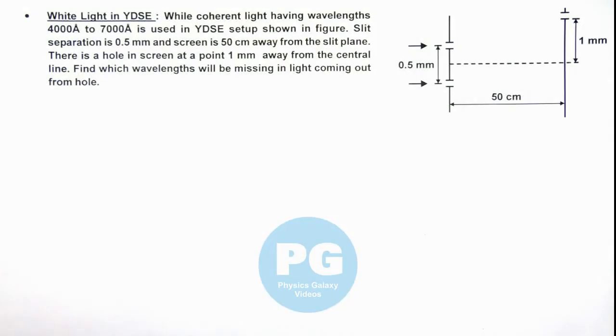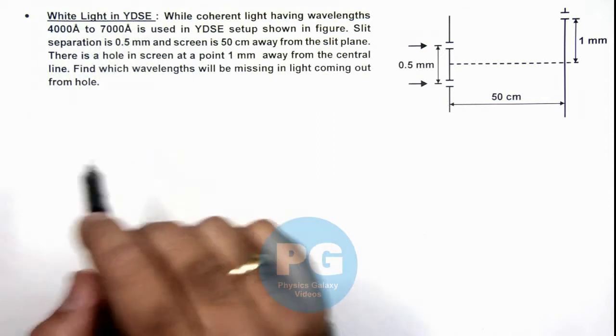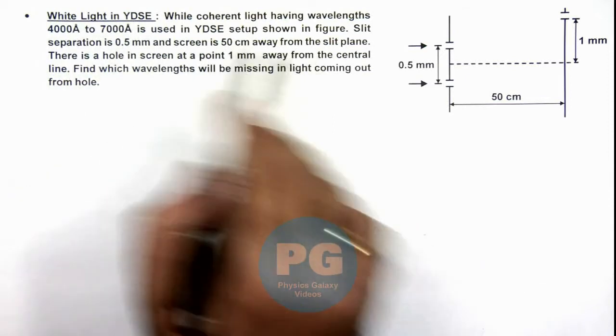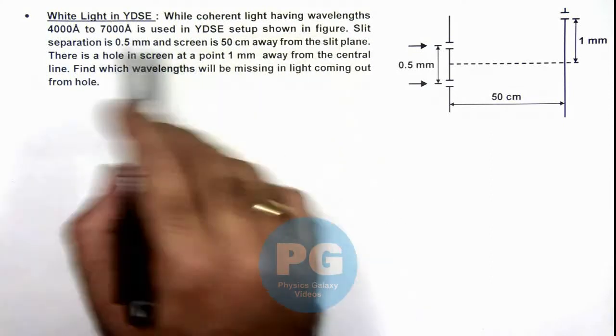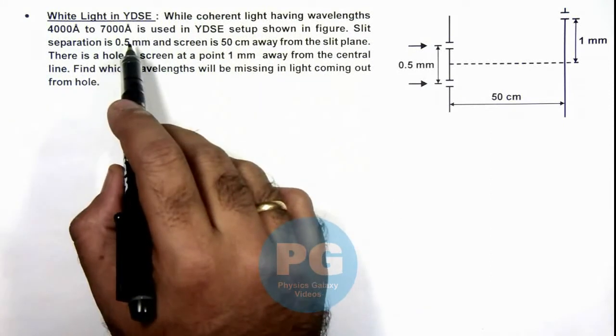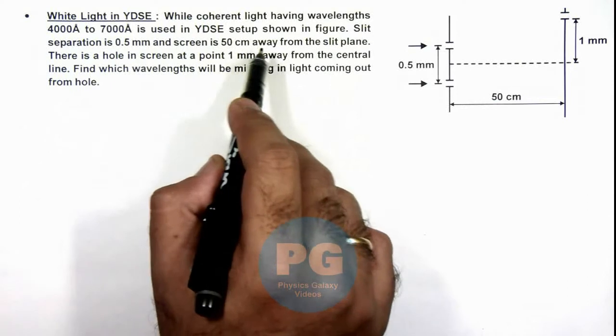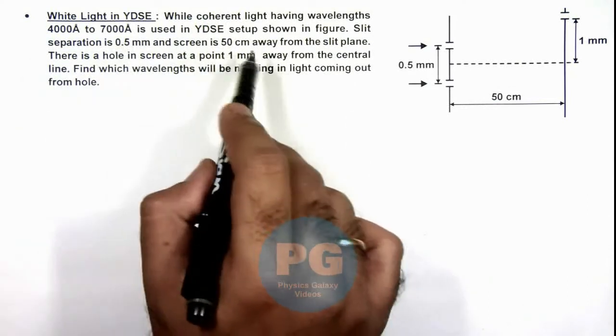In this illustration, we'll be analyzing white light in YDSE. Here we are given that coherent light having wavelength 4000 to 7000 angstrom is used in YDSE setup, which is the visible range of white light approximately.